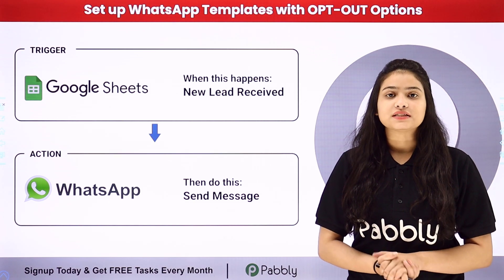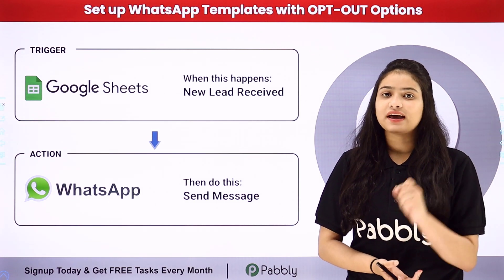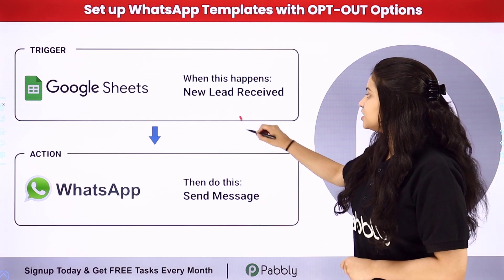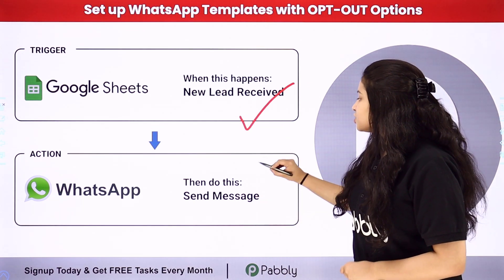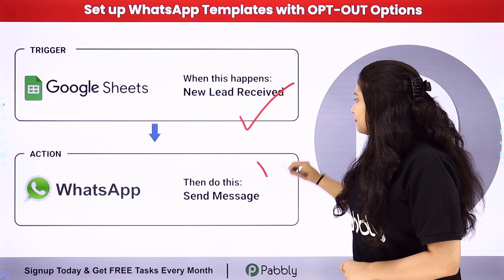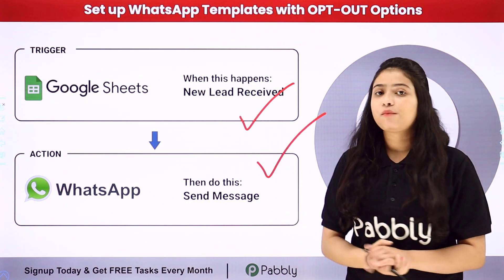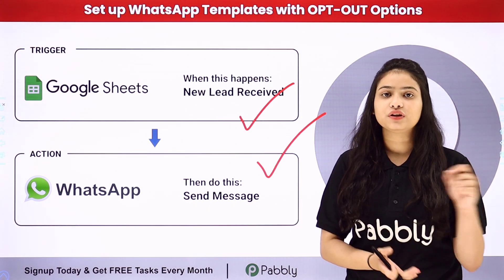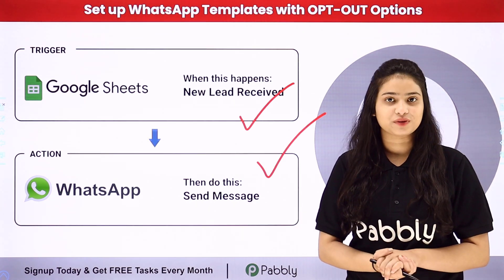Pabbly Connect works on two principles: Trigger and Action. In the Trigger we are going to take Google Sheets, and in the Action we are going to take WhatsApp Cloud API, with the help of which we are going to create this template along with quick reply buttons automatically.